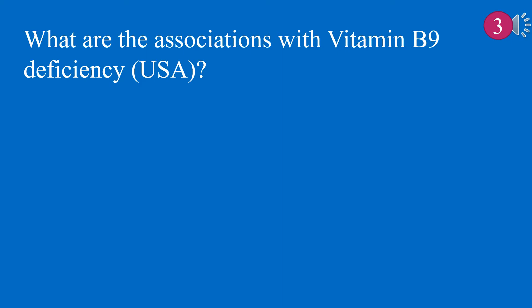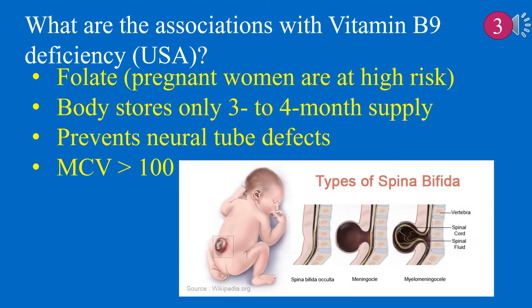What are the associations with vitamin B9 deficiency in the USA? With vitamin B9 deficiency in the USA, think of: 1. Folate — pregnant women are at high risk. 2. Body stores only 3 to 4 months supply. 3. Prevents neural tube defects. 4. MCV above 100.